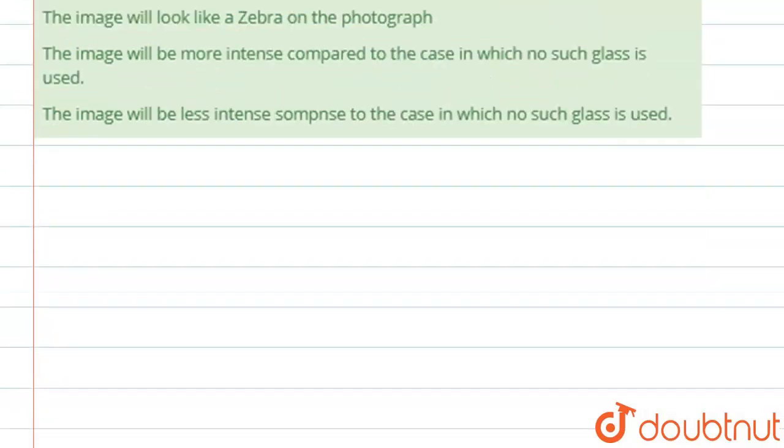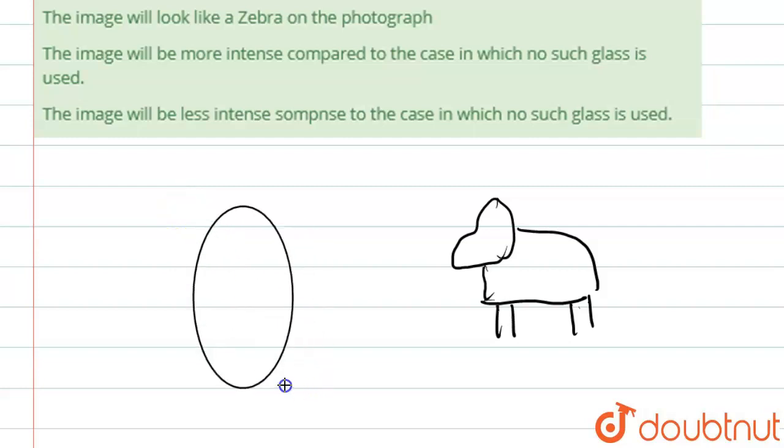Basically if you see, if there is a donkey, let's suppose I'm drawing a rough donkey. Let's suppose this is a donkey, don't mind my drawing. So basically this is a donkey and basically this is the objective of a camera.